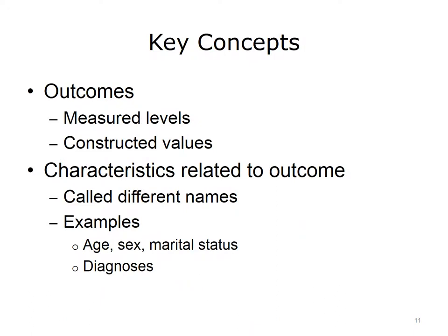Risk adjustment and predictive modeling share several key concepts. First, both are concerned with outcomes. The outcomes can be measured levels, such as cost or blood pressure, or constructed values, such as whether a patient has been readmitted after an initial stay in the hospital. When designing a risk adjustment or predictive model, costs, also known as expenditures, are measured continuously from zero to any total amount. Other outcomes, like readmission, mortality, or complications, are events measured with a yes or no and are typically coded as a one or a zero in the data.